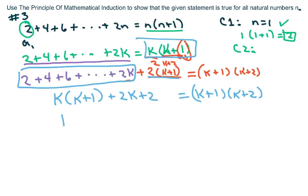So I'm going to clean this up. If you get k squared plus k plus 2k plus 2, this is k squared plus 3k plus 2, and then you factor and you get k plus 1 times k plus 2.